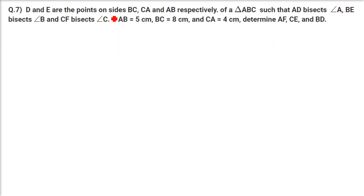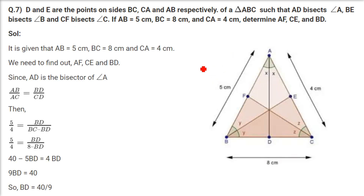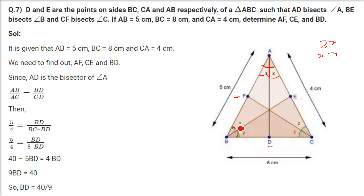Next problem: D, E and F are points on sides BC, CA and AB respectively, such that AD, BE and CF are angle bisectors of angles A, B and C respectively. We have to find AF, CE and BD. Let angle A equal 2X, angle B equal 2Y and angle C equal 2Z, each bisected equally.